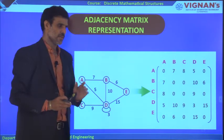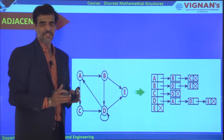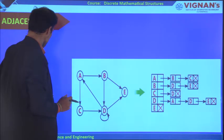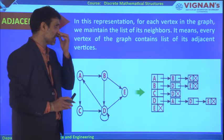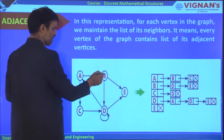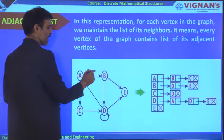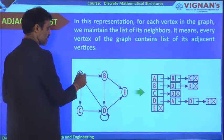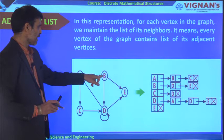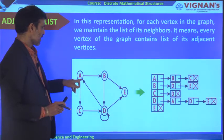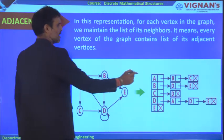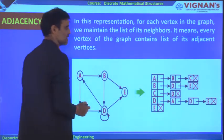The second representation is adjacency list representation. In this representation, for each vertex in the graph, we maintain a list of its neighbors — that is, the other vertices to which it is connected by edges. For vertex A, if there are edges A to B and A to C, then the neighbors of A are B and C. For vertex D, the neighbors are A and E.